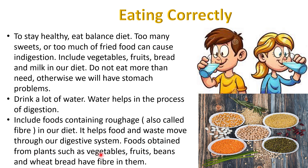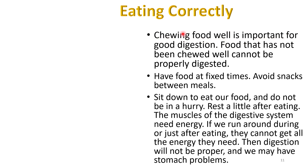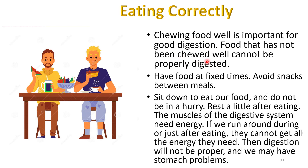Food obtained from plants such as vegetables, fruits, beans, and wheat bread have fiber in them. Chewing food well is important for good digestion — food that has not been chewed well cannot be properly digested. We must have food at fixed times and avoid snacks between meals. We must sit down to eat and not be in a hurry while eating. Rest a little after eating as the muscles of the digestive system need energy. If we run around during or just after eating they cannot get all the energy they need, and digestion will not be proper.